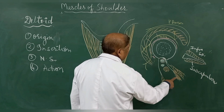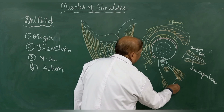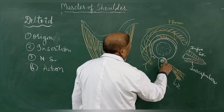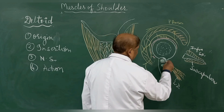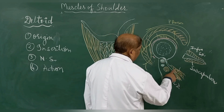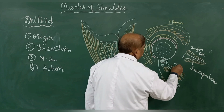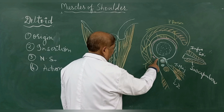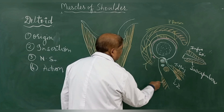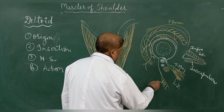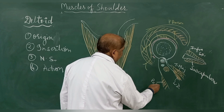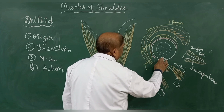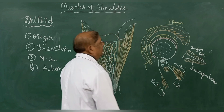In the intertubercular sulcus, there is the aponeurotic attachment of the latissimus dorsi, represented by 'LD.' On the inner lip of the bicipital groove, there is the attachment of the teres major muscle. On the medial lip, there is the attachment by aponeurosis or tendon of the pectoralis major. So this is the pectoralis major, this is the teres major, and in between these two muscles in the floor of the bicipital groove, there is the attachment of the latissimus dorsi.